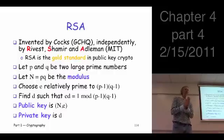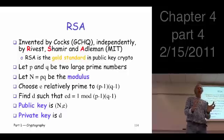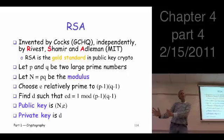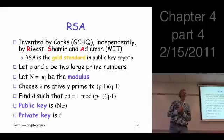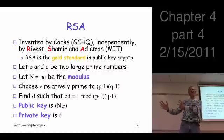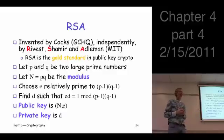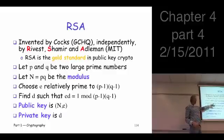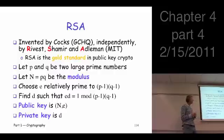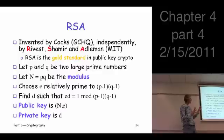Any public key system has to be based on some underlying hard mathematical problem. For the knapsack, that was the knapsack problem itself. For RSA, the underlying hard mathematical problem is factoring. Given two primes, it's easy to multiply them together, but it's hard to factor the result when the numbers are large — and that's what the security of RSA relies on.